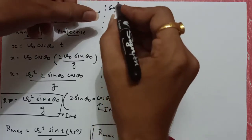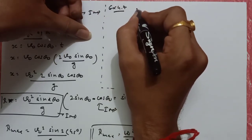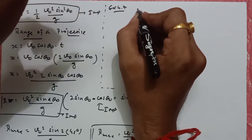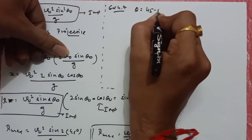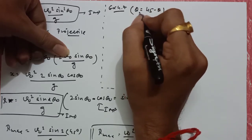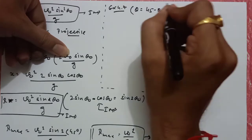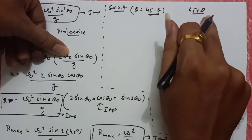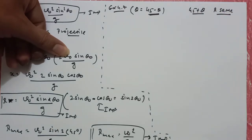Galileo ने अपनी एक book में लिखा था कि equal interval पे, equal amount की changes पे अगर दोनों angle हैं — जैसे कि उसका कहने का मतलब यह है कि theta is equal to 45 minus theta, अगर आपका कोई angle theta है 45 minus theta है, and एक angle है 45 plus theta — अगर आपके पास दो ऐसे angles हैं, 45 minus theta और 45 plus theta, तो दोनों के लिए range same होगी। यह हमें prove करना है।